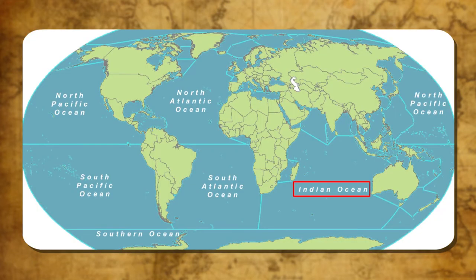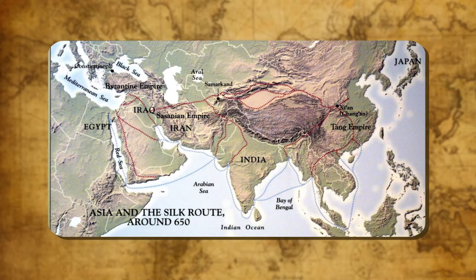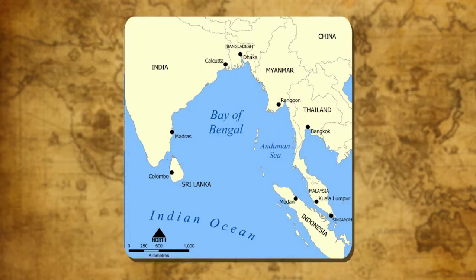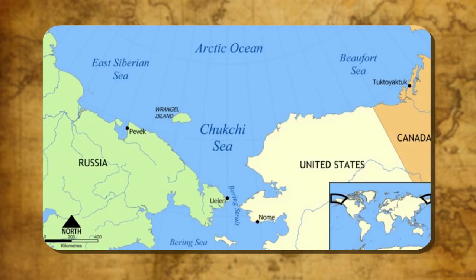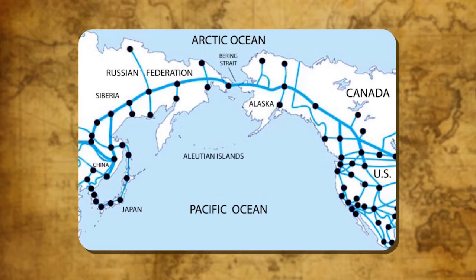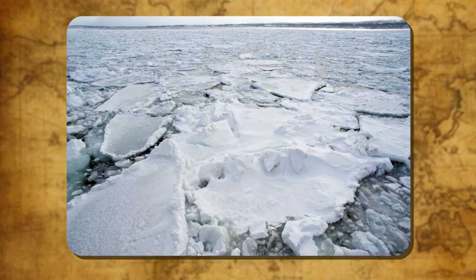The Indian Ocean is the only ocean in the world that is named after a country, India, which shows the importance of India in ancient times in terms of international trade. The shape of the ocean is almost triangular. In the north it is bound by Asia, in the west by Africa and in the east by Australia. The Arctic Ocean is bordered by the landmasses of Eurasia and North America. It is connected with the Pacific Ocean by a narrow stretch of shallow water known as the Bering Straits. It is centred around the North Pole and lies within the Arctic Circle. Drifting icebergs, some about 30 meters thick, are common in the Arctic Ocean.